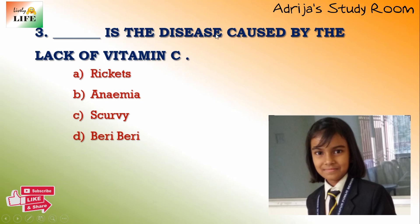Next question: which is the disease caused by the lack of vitamin C? Names of four diseases are given. Rickets is caused by lack of vitamin D, not vitamin C. Anemia is caused by lack of iron. Scurvy — yes, scurvy is caused by lack of vitamin C. Beriberi is caused by lack of vitamin B1. So the answer is scurvy — answer is C.